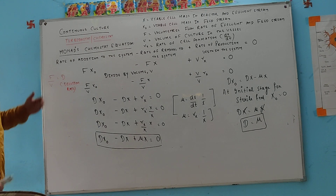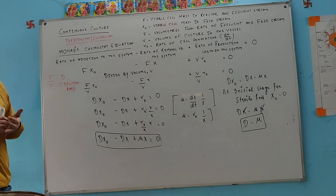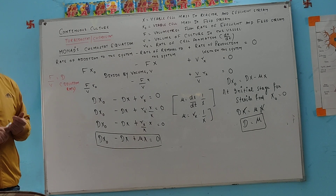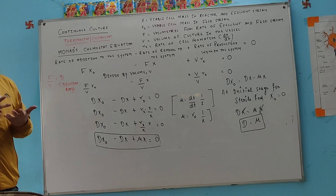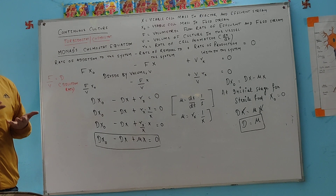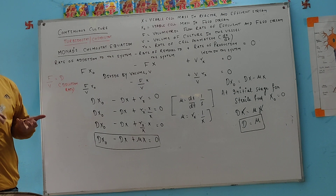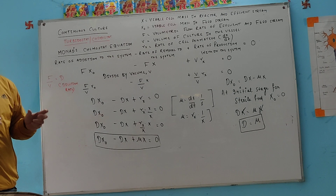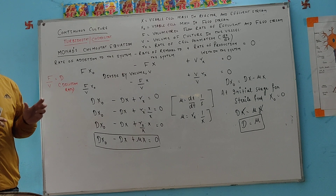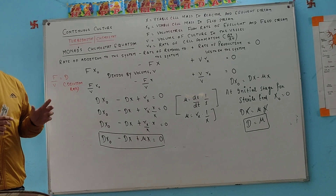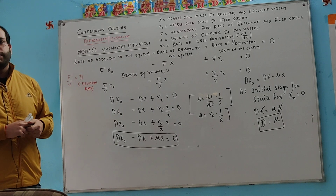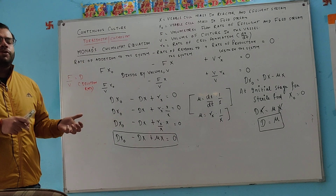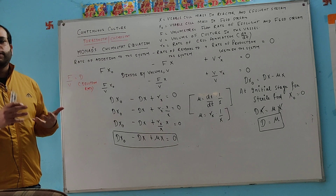That's why we have a turbidostat and a chemostat. In the turbidostat, fresh medium is automatically added. In the chemostat, we keep a particular nutrient in a limited amount. When it runs out, growth stops, and when fresh medium is provided, growth starts again.